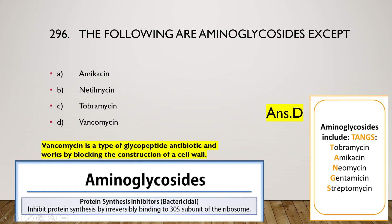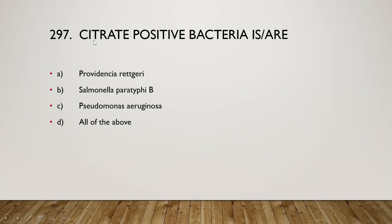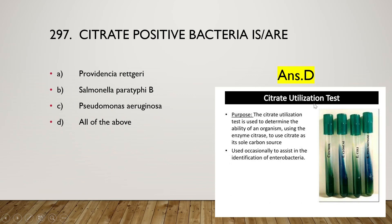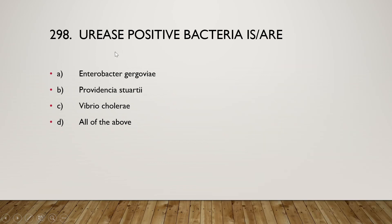The next question is: citrate-positive bacteria are (A) Providencia rettgeri, (B) Salmonella paratyphi B, (C) Pseudomonas aeruginosa, or (D) all of the above. The right answer is option D — all of the above are citrate-positive. The citrate utilization test uses Simmons citrate agar to determine the ability of an organism to use citrate as its sole carbon source using the enzyme citrase. It is also used to assist identification of Enterobacter.